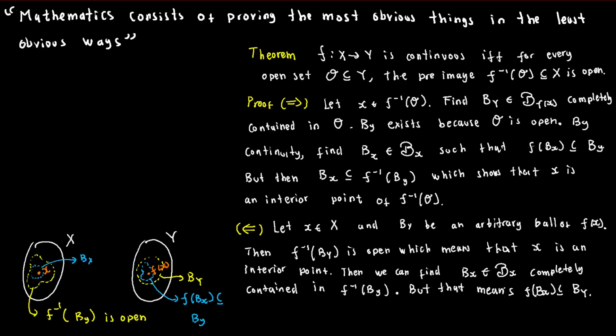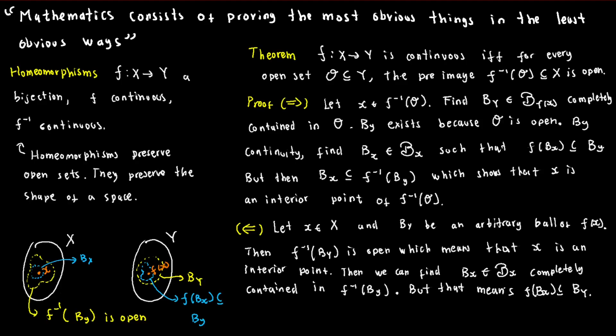This relationship between continuity and open sets suggests that two spaces are the same, in terms of their shape, when there is a continuous bijection with a continuous inverse between them. Such bijections, also known as homeomorphisms, preserve the open sets in each space. This is similar to how two sets have the same size when there is a bijection between them.